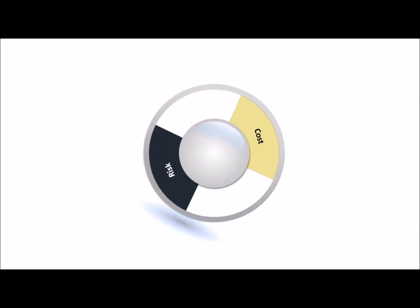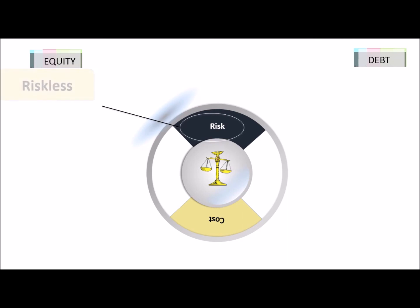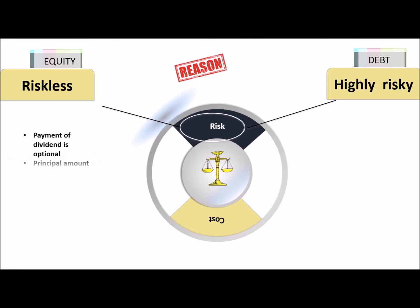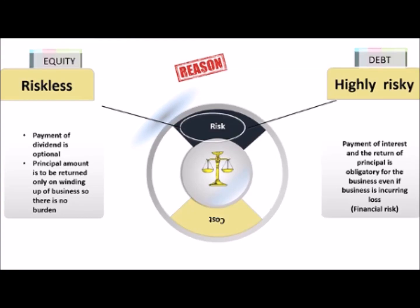Now coming to the second basis, that is risk. If we compare equity and debt on the basis of risk, equity is considered riskless whereas debt is highly risky. With equity there is no burden on the company because payment of dividend is optional and the principal amount is to be returned only on the winding up of the company. Whereas with debt, payment of interest and return of principal amount is obligatory.